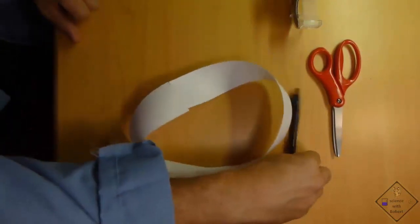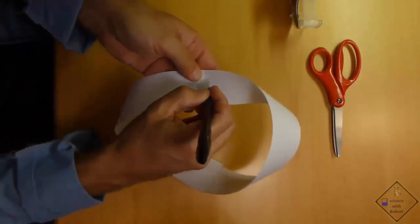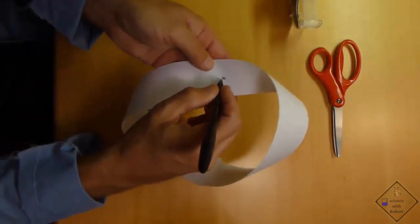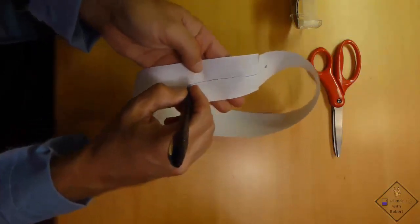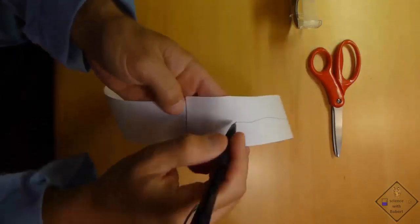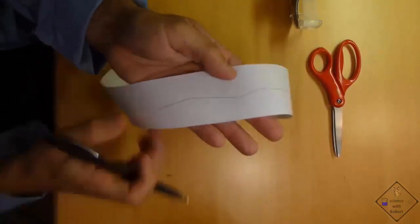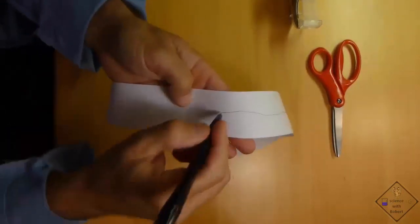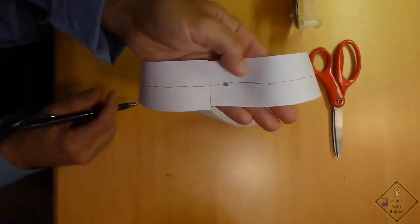In our first experiment, let's draw a single line down the entire Mobius strip. Where do you think you will end up? We end up right where we started. And that is what should happen on a single surface object.